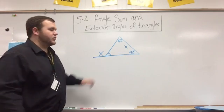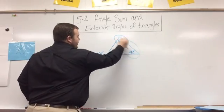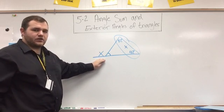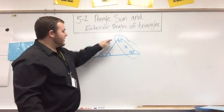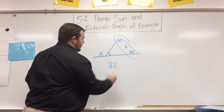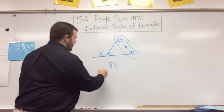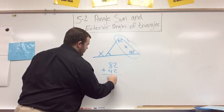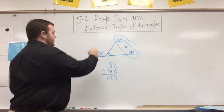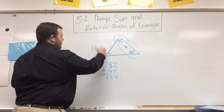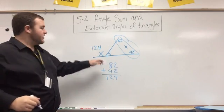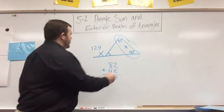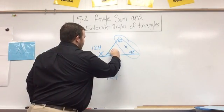So a trick that we can do is actually add the other two interior angles that aren't connected with the exterior angle. So here we have 82 and 42. So if we add those together, we get 124. And so X equals 124. And we can use the 124 to then find the interior angle if we want to. And so it should be 56.